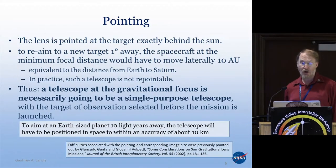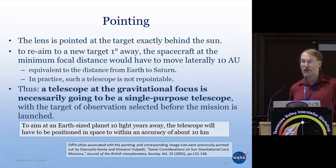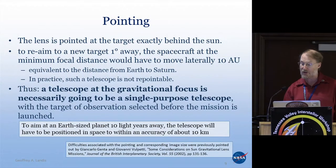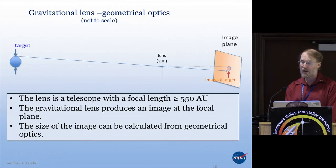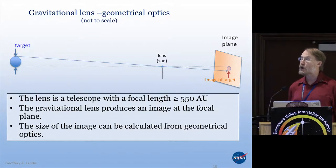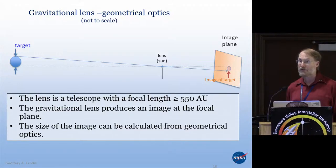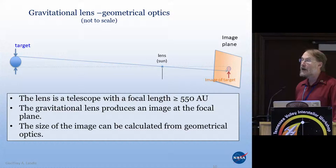It also means that to aim at a target far away, you need to position yourself extremely well. You're at a distance of on the order of maybe 90 trillion kilometers, and you need to find your point to within a distance of something like 10 kilometers just to image the planet. If we're looking at the sun as just a lens with a focal length of greater than 550 astronomical units, magnification is proportional to the focal length, so the gravitational lens produces an image at a conceptual focal plane.